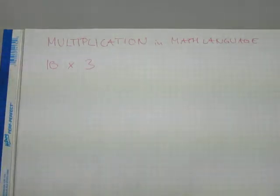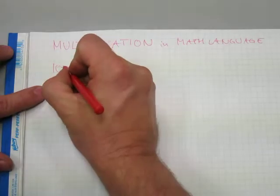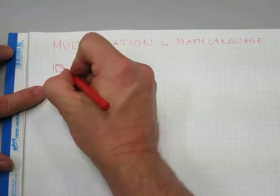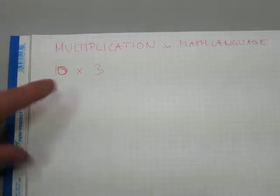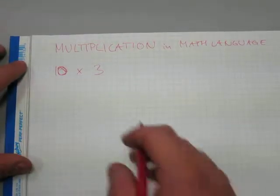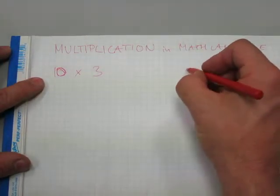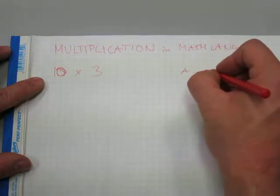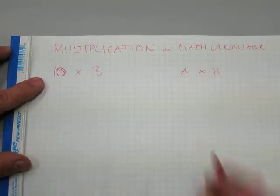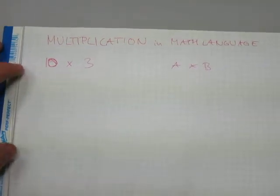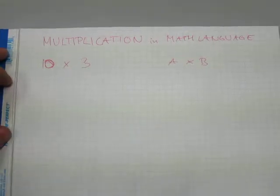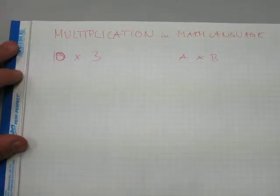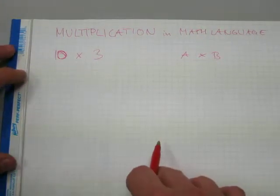The format most of you are familiar with is ten times three, written with an X between the two numbers. If it's in a formula book, then you might see it in this format with a cross between two letters representing two quantities, like A × B.